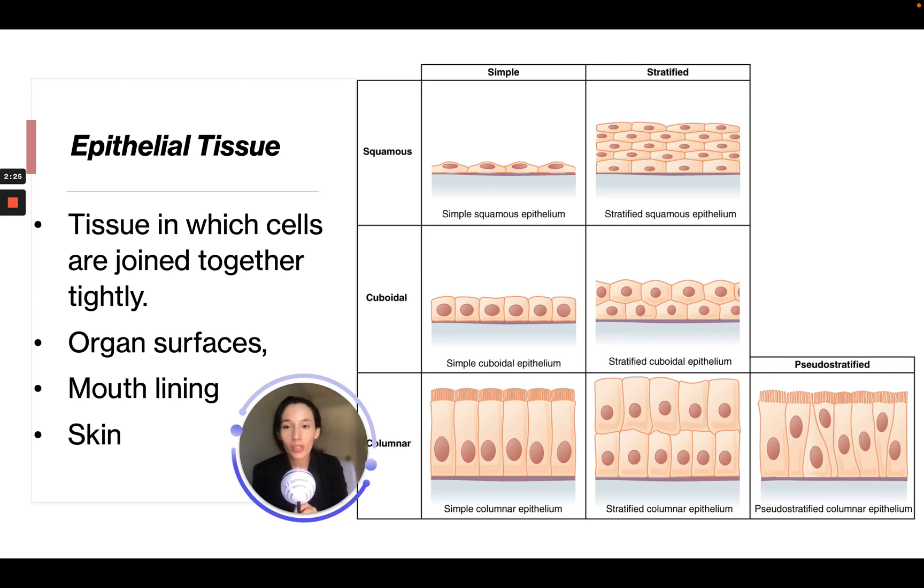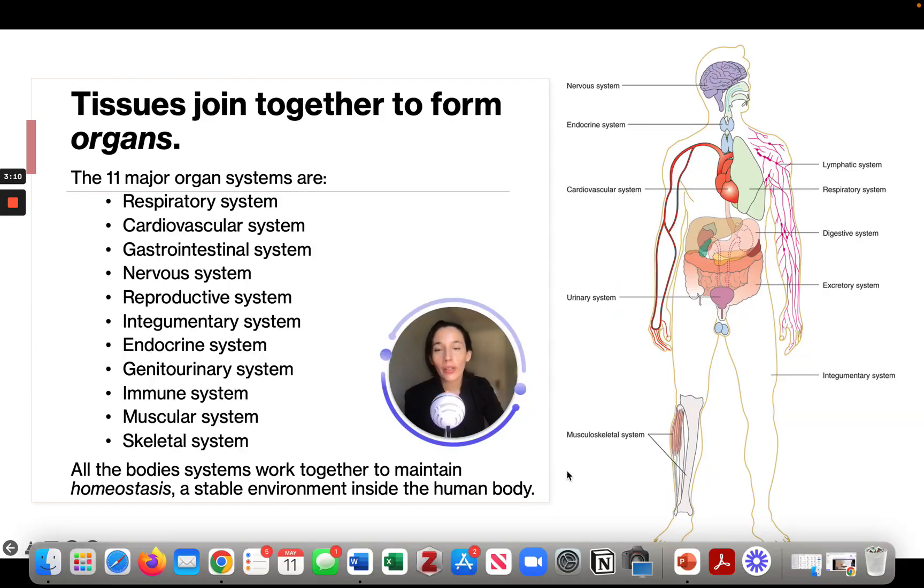Then we have epithelial tissue. This is tissue in which cells are joined together tightly. It's on organ surfaces, in your mouth lining, and in your skin. These are the different types of epithelial tissues if we looked at them under a microscope. We have simple squamous epithelial, stratified squamous epithelial, cuboidal simple epithelial, stratified cuboidal epithelial, simple columnar epithelial, stratified columnar epithelium, and pseudostratified columnar epithelium.